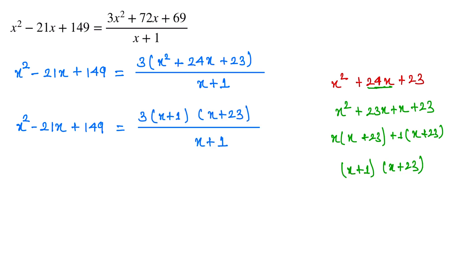So this can be written as x² - 21x + 149 equals... We multiply this, so 3x plus 69.